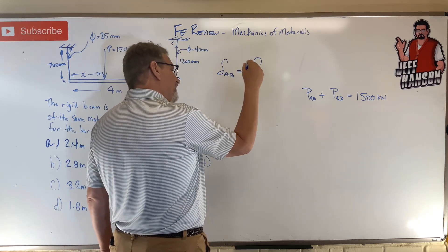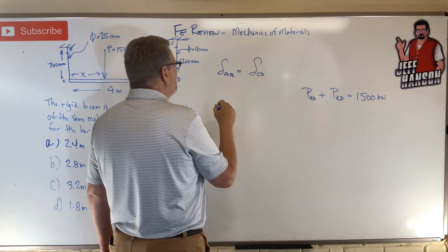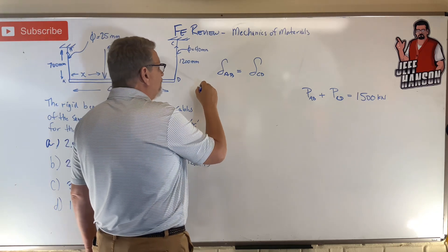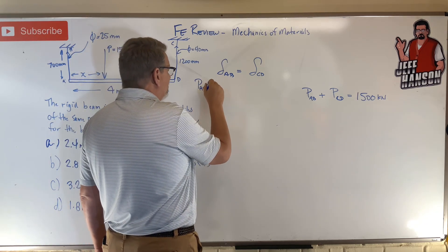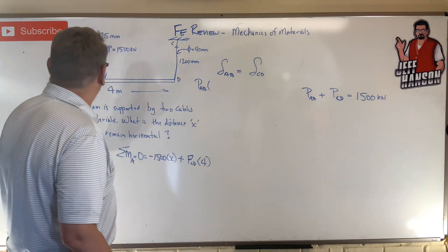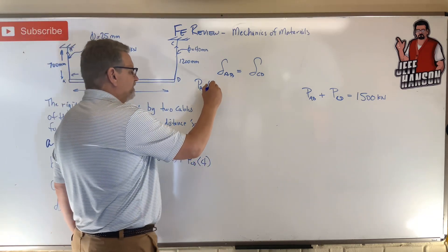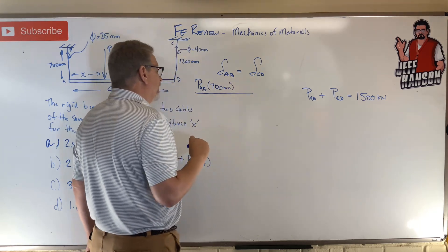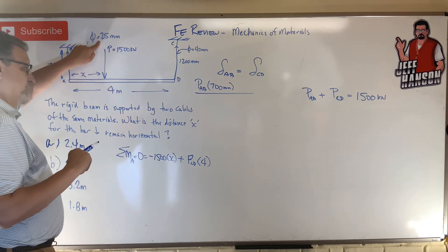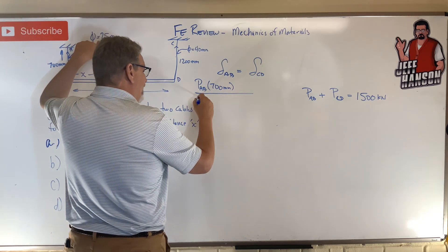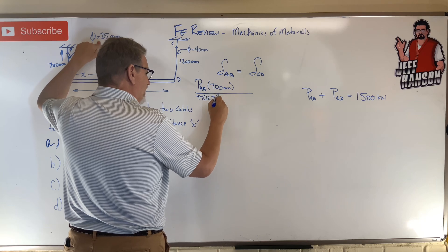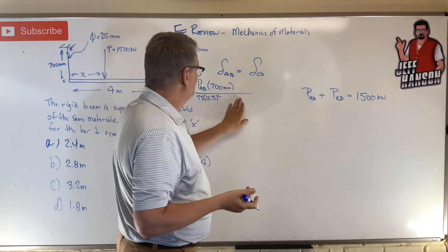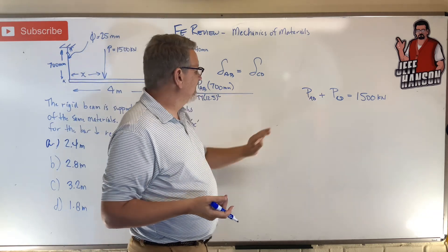So now I need a relationship between this one and that one. We're going to use PL over AE. So P in AB times L for AB, how long is L? 700 millimeters, divided by, well A, the diameter is 25, so that's pi times 12.5 squared times E.